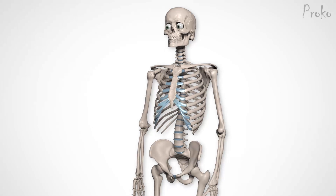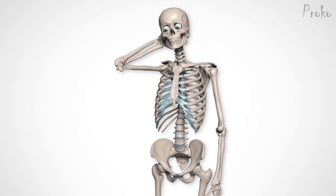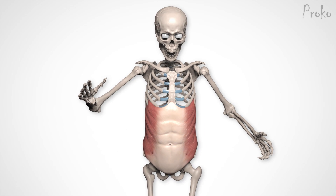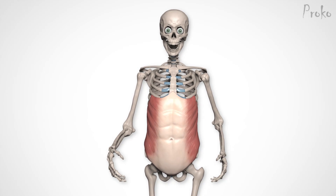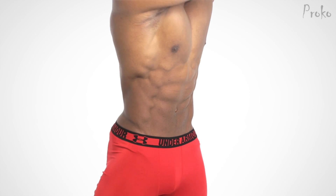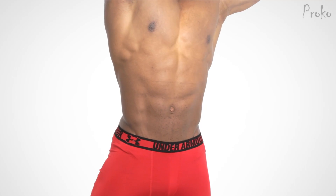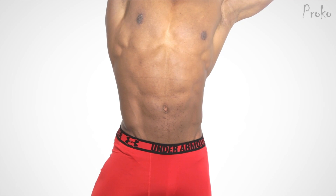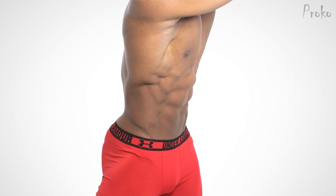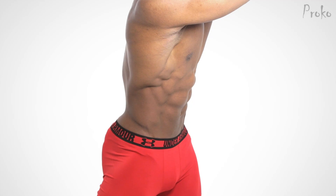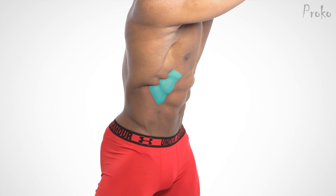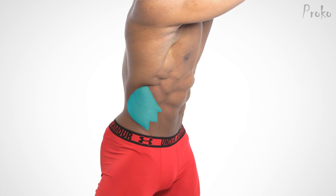It sits on the sides of our torso and connects the ribcage to the pelvis. When flexed, the digitation of the oblique is revealed, and you see tube-like striations at 45-degree angles on the upper half. This upper half is called the thoracic portion, and the lower half is called the flank portion.